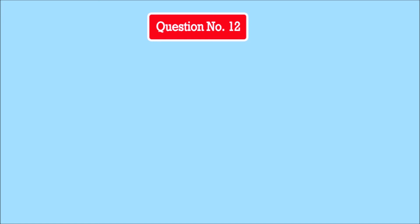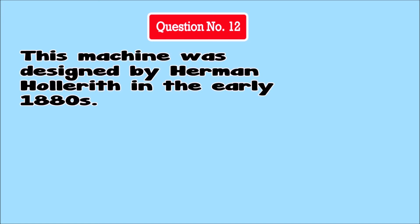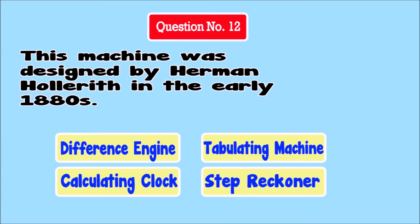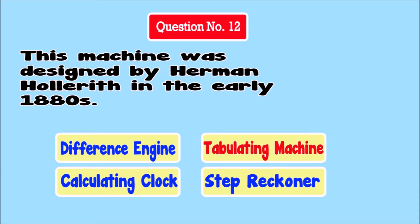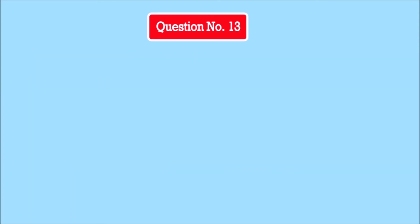Question number twelve. This machine was designed by Herman Hollerith in the early 1880s. Options: Difference Engine, Tabulating Machine, Calculating Clock, Step Reckoner.